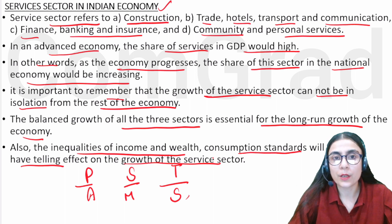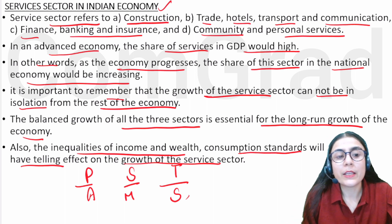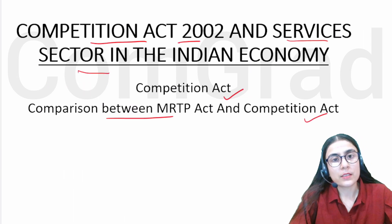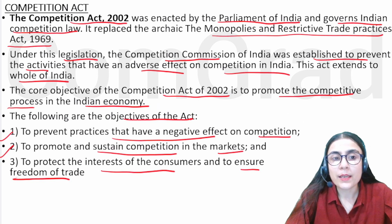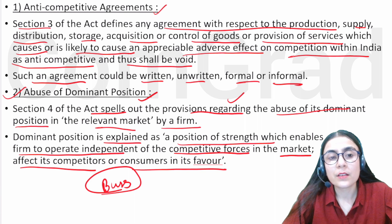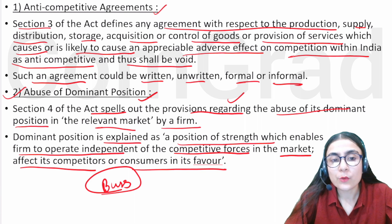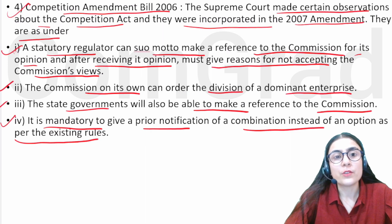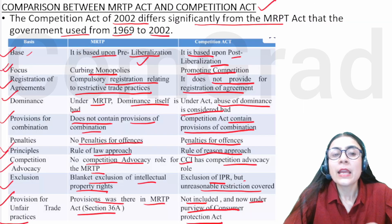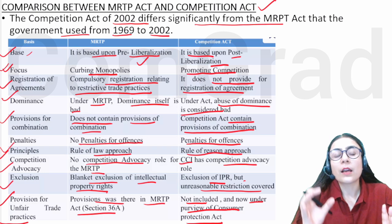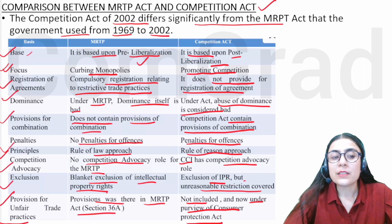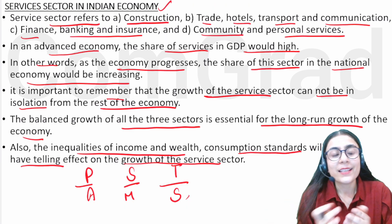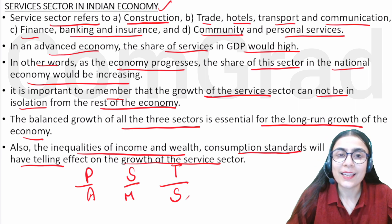I hope today's video was clear. We covered the Competition Act 2002 and the service sector. Key topics included anti-competitive agreements, abuse of dominant position, regulation of combinations, the Competition Amendment Bill 2006, a comparison between the MRTP Act and the Competition Act, and the service sector in the Indian economy. See you in the next video. Goodbye.